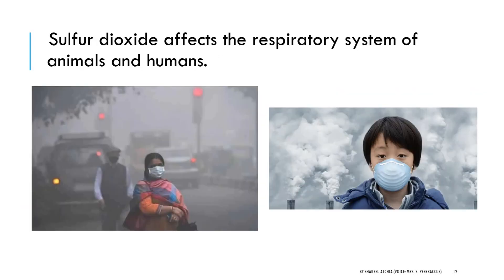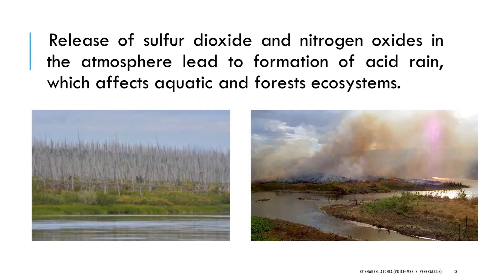Sulfur dioxide released from chimneys of factories and exhaust pipes of vehicles affects the respiratory system of animals and humans. The release of sulfur dioxide and oxides of nitrogen, which are acidic gases in the atmosphere, leads to the formation of acid rain, which affects aquatic and forest ecosystems.